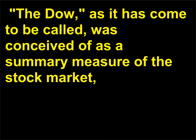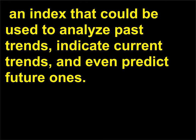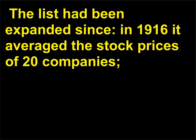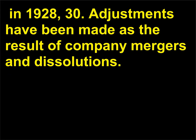The Dow, as it has come to be called, was conceived of as a summary measure of the stock market — an index that could be used to analyze past trends, indicate current trends, and even predict future ones. The first DJIA averaged the prices of 12 major companies. The list had been expanded since; in 1916 it averaged the stock prices of 20 companies, and in 1928, 30. Adjustments have been made as the result of company mergers and dissolutions.